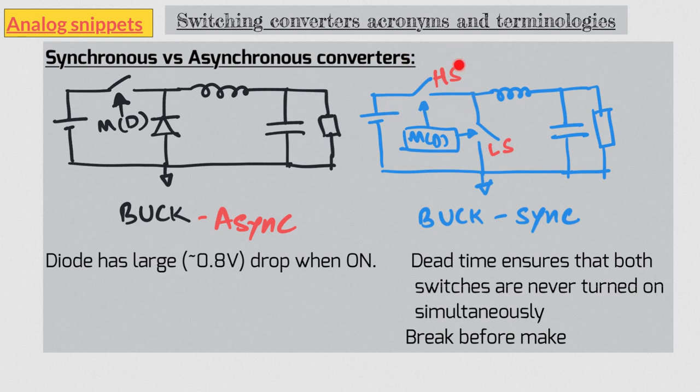During dead time when both switches are off, the conduction happens through body diodes. So there is still conduction happening through diode even in synchronous converters, but that diode conduction duration is fairly small, typically a few nanoseconds. Okay, so that is all about synchronous and asynchronous converters for now. We will have much more to say about synchronous converters in future videos.